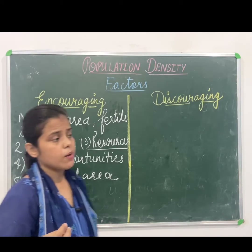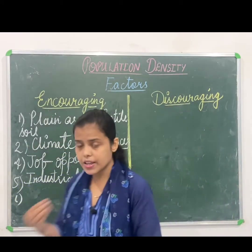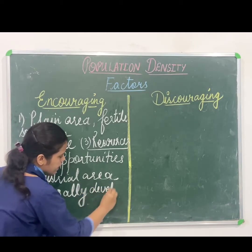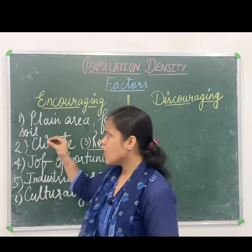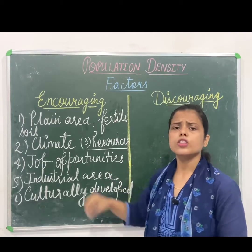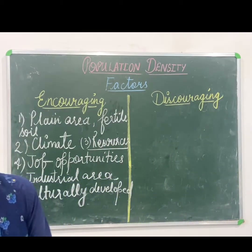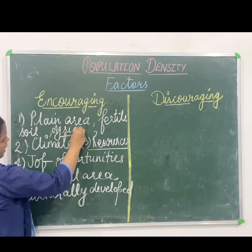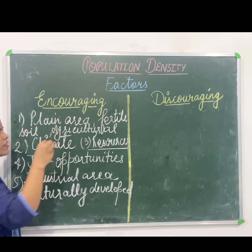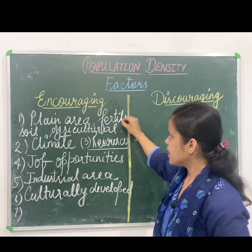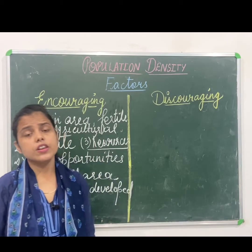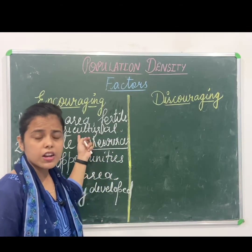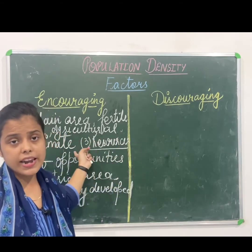Then you can say culturally developed — the society of that place should be cooperative and culturally developed. These are the key points which encourage the settlement of any area. Under the land factor you can also add agricultural facility — the facility of water and irrigation. If the land has fertile soil, it will support good agriculture, which requires proper irrigation, a proper climate, and proper rainfall.